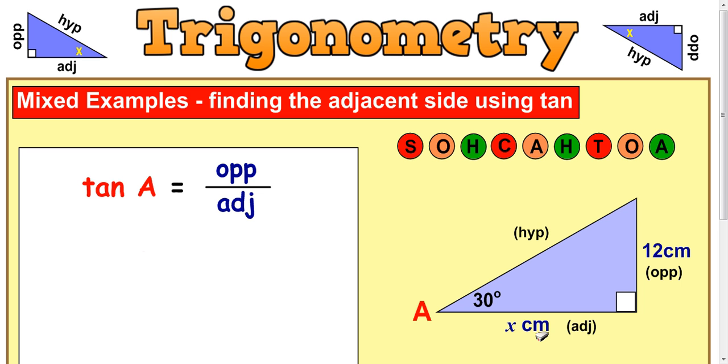So, when you come to substitute values into your formula here, we can say that A is 30, so tan 30 is equal to, and the opposite side is 12, and the adjacent side is the unknown, it's the x.